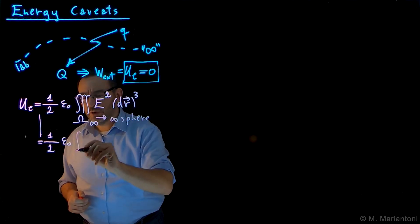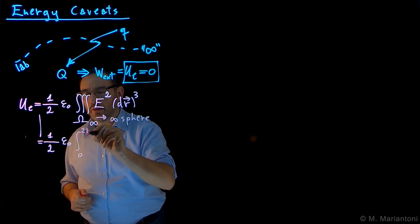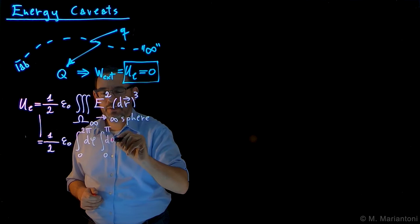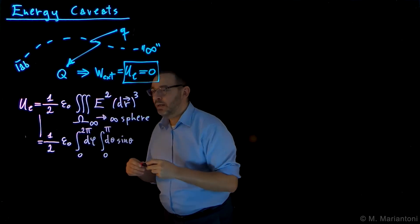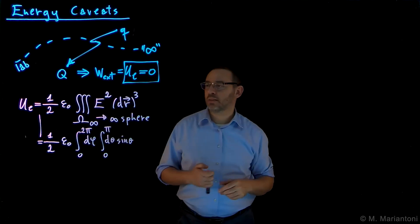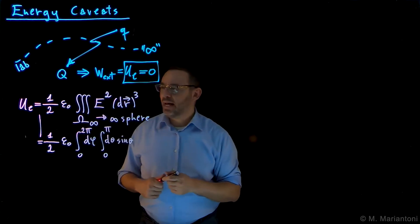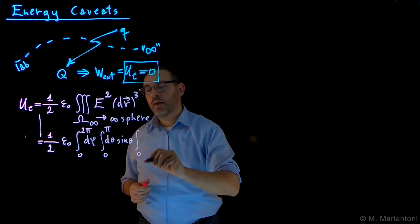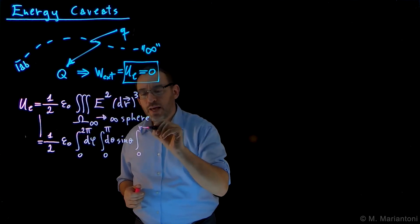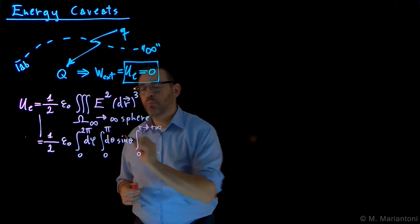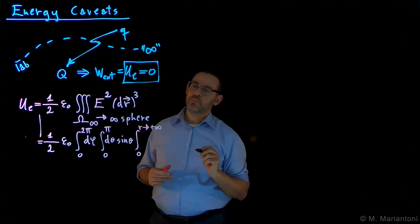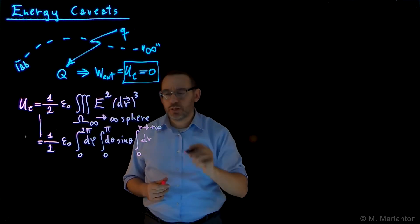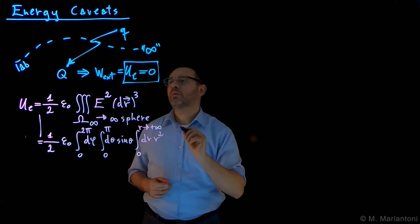So this integral becomes, as always, the integral from 0 to 2π, dφ, the integral from 0 to π, dθ sinθ. We are expressing a volume element in 3D in spherical coordinate systems. And finally, we want to have the integral between 0 and a certain small r, which eventually we will push to plus infinite because we want to build an infinite universe. This is dR, because we are also pushing in the third dimension. This must be multiplied times R squared.